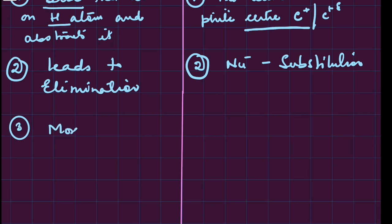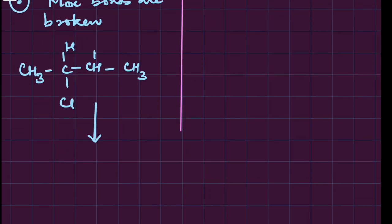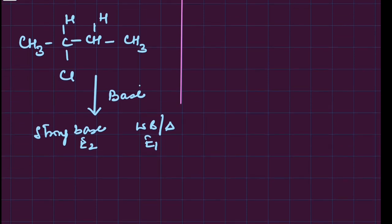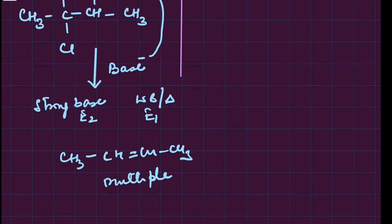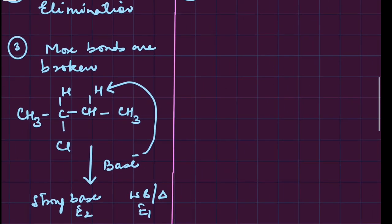In elimination, more bonds are broken. Let's do an example. Suppose we have a base - if it is a strong base, it will undergo E2; if it is a weak base and we have heat, it will undergo E1. The attack of the base is going to be on this proton, and finally what we get is multiple bonds. Now if you see, we have broken two strong sigma bonds and we have got a weak pi bond.